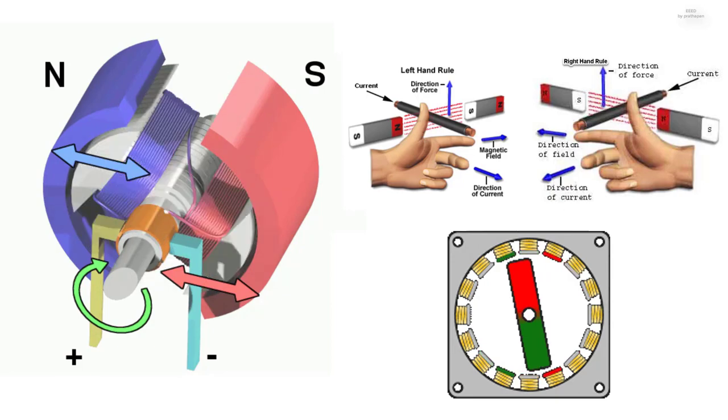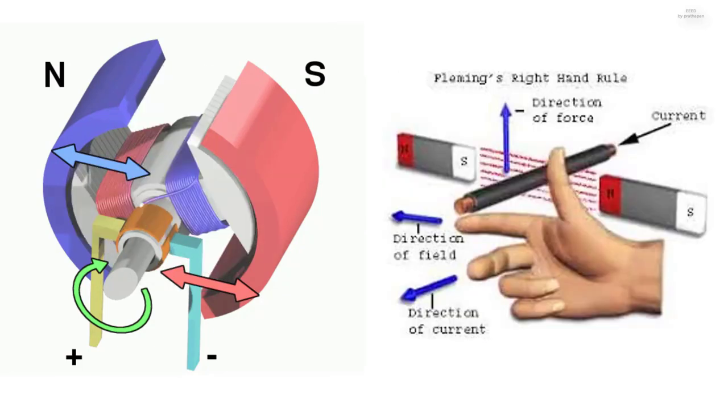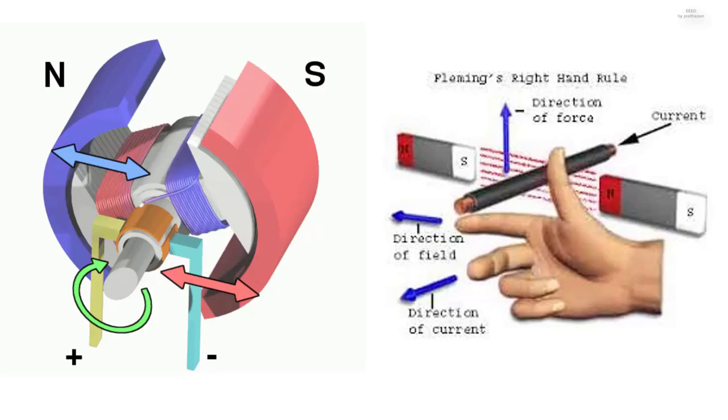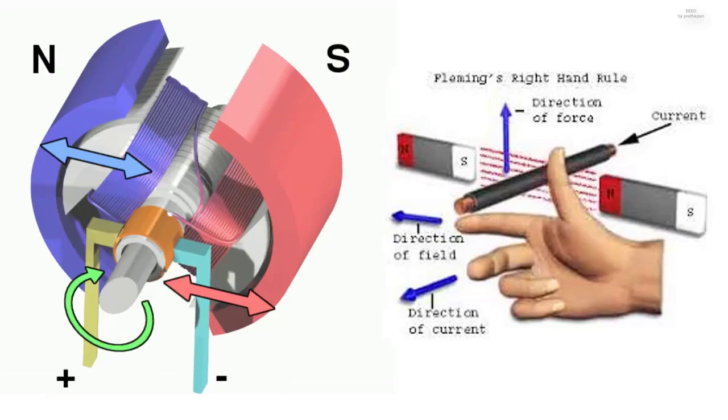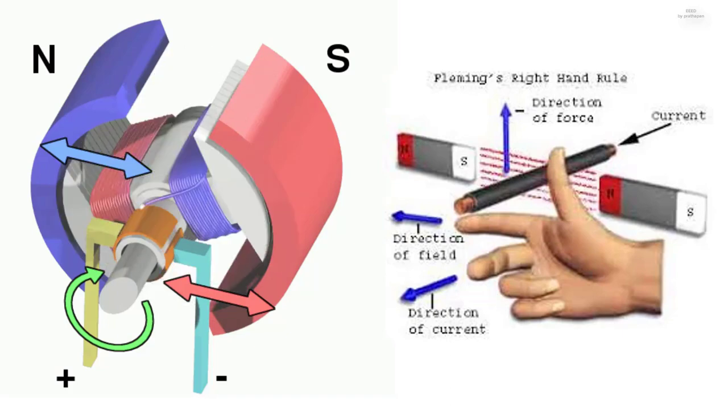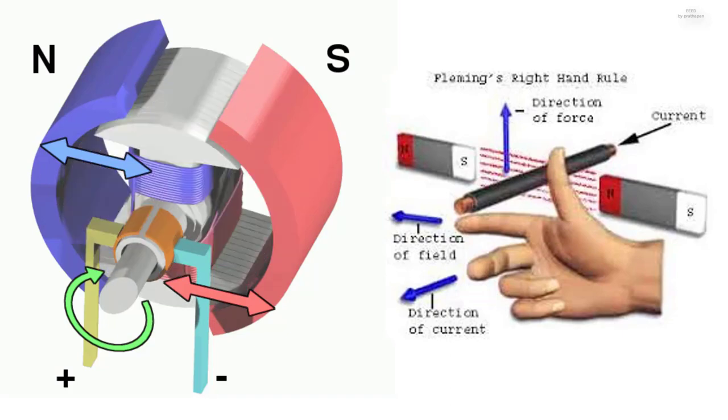First variant: The thumb represents the direction of the thrust on the conductor or motion of the conductor. The forefinger represents the direction of the magnetic field. The center finger represents the direction of the current.